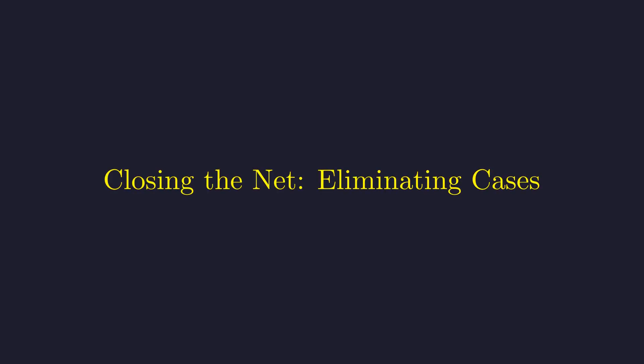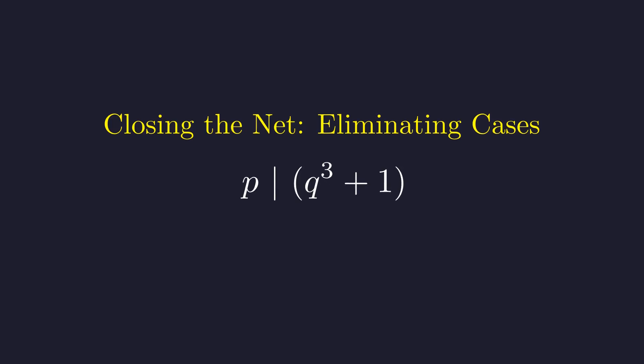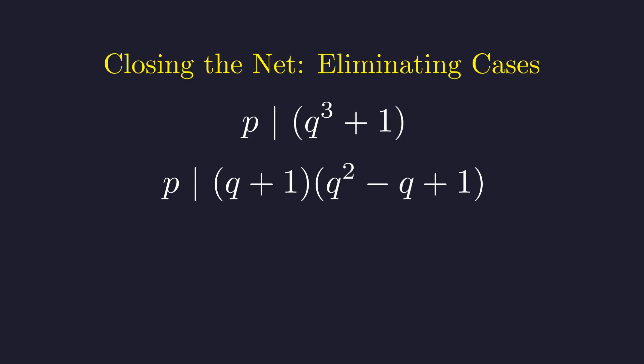Using these two divisibility constraints, we can begin to eliminate possible solutions. Let's focus on our second constraint. We can factor the expression q cubed plus 1 as a sum of cubes. Since p is prime, it must divide at least one of these factors. We should consider if p could divide both. If it did, p would have to divide their greatest common divisor. The greatest common divisor of q plus 1 and q squared minus q plus 1 can be shown to divide 3. This would imply p equals 3. However, our initial inequality showed that p is greater than q to the 5 thirds, which is not possible for p equals 3. Thus, p divides exactly one of these two factors, which allows us to split the problem into two cases.